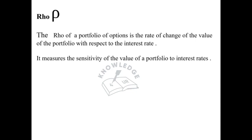Next is Rho. The Rho of a portfolio of options is the rate of change of the value of the portfolio with respect to the interest rate. It measures the sensitivity of the value of a portfolio to interest rate changes.